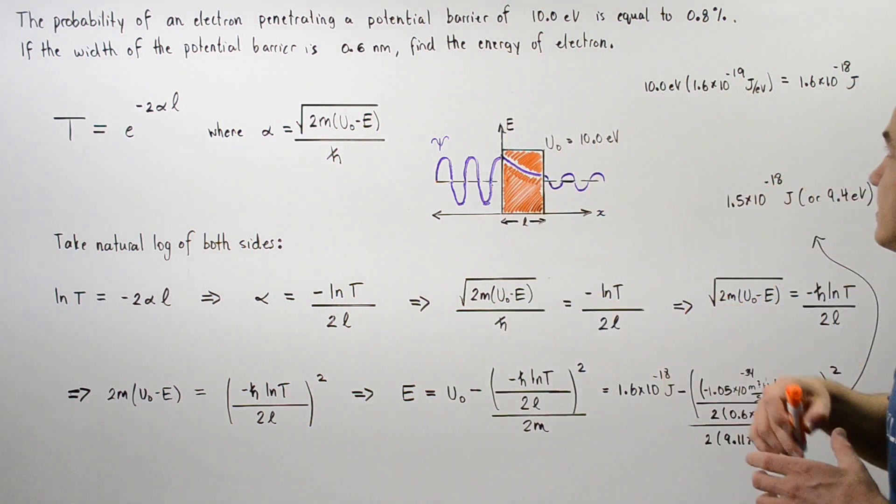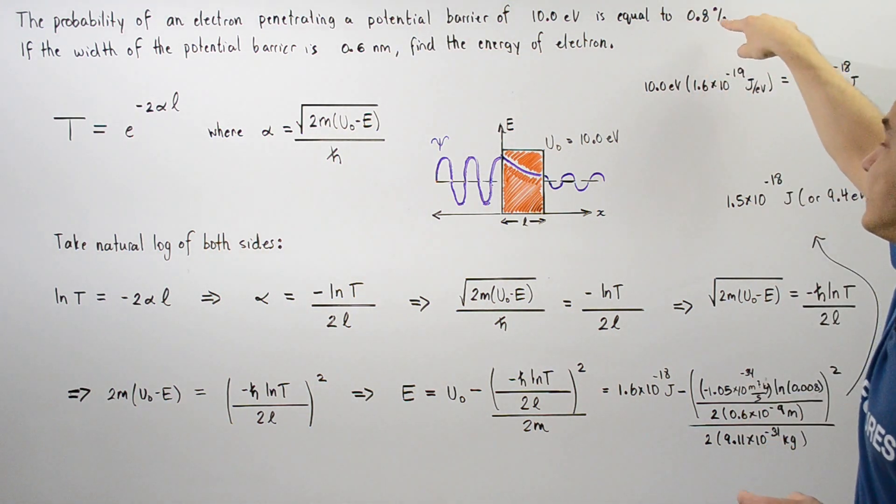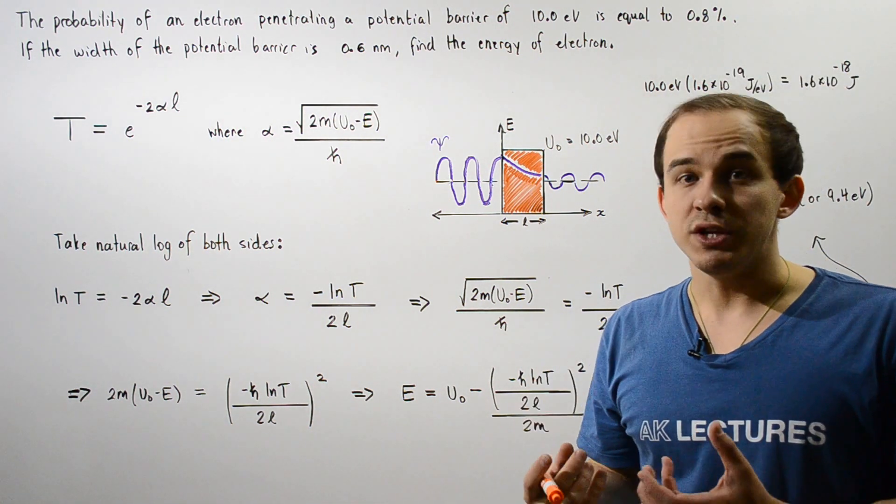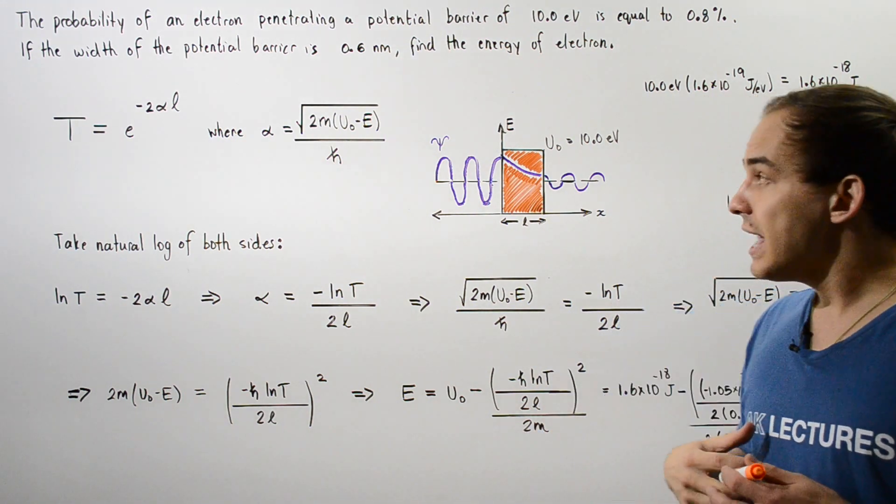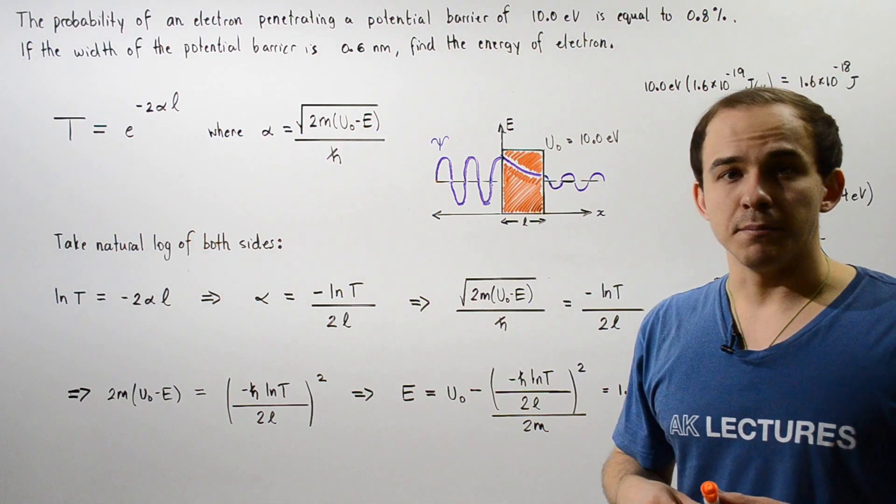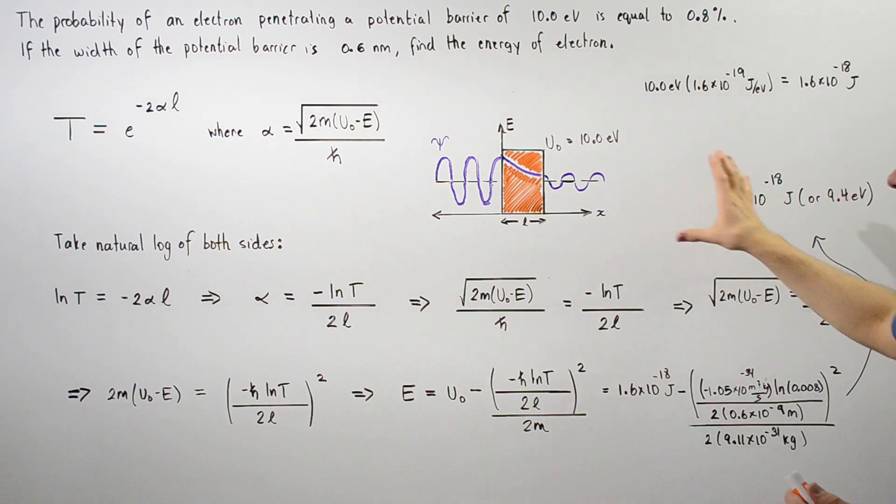What exactly is the meaning behind 0.8%? If we take this percentage and divide it by 100, we get the transmission fraction. Basically, if 1000 electrons hit this particular barrier, only 8 of those electrons will actually transmit and move to the other side of our barrier. That's exactly what this quantity means.